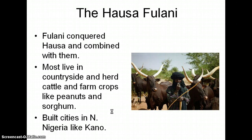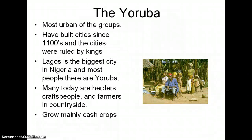Now, the Hausa-Fulani — the Fulani conquered the Hausa and combined with them. Most of them live in the countryside and herd cattle and farm crops like peanuts and sorghum. They built cities in the north of Nigeria, like Kano. The Yoruba are the most urban of the groups. They've built cities since the 1100s, and the cities were ruled by kings. Lagos is the biggest city in Nigeria, and most of the people there are Yoruba. Many people are herders, craftsmen, and farmers in the countryside, and they grow mainly cash crops.